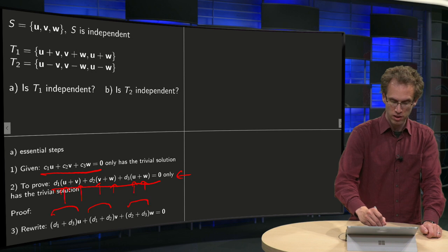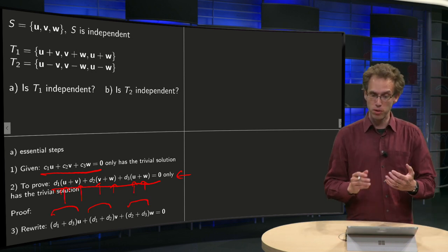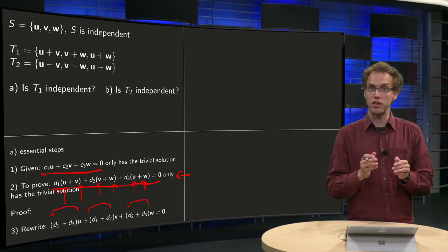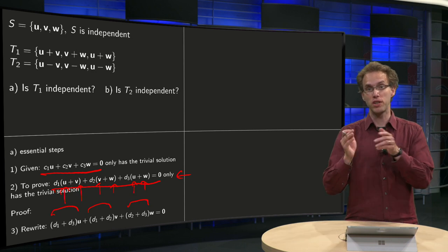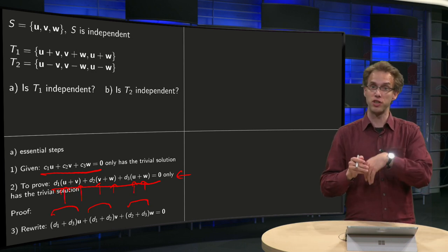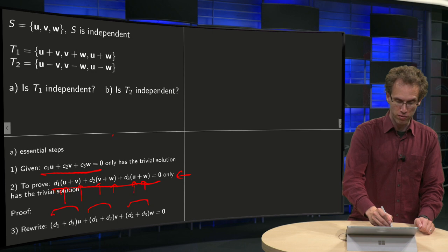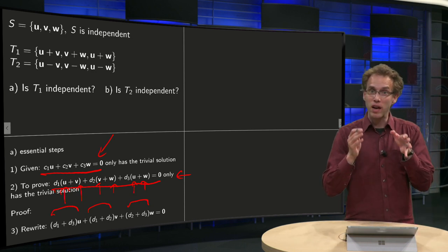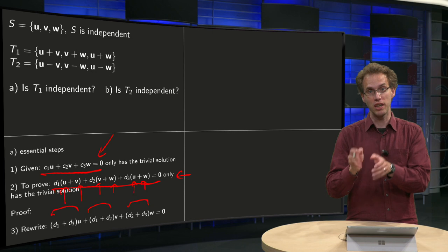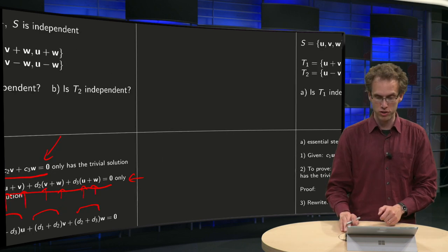So now we have an equation of the form scalar times u plus scalar times v plus scalar times w equals zero and from what is given over here we know that it only has a trivial solution: first scalar equals zero, second scalar equals zero, third scalar equals zero.